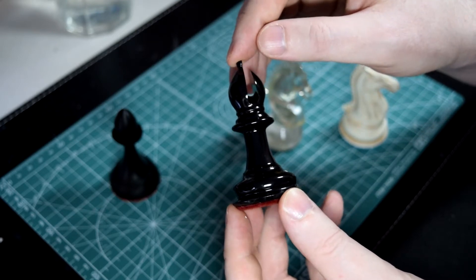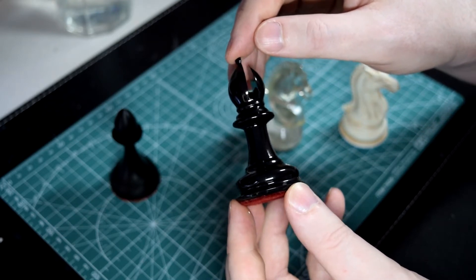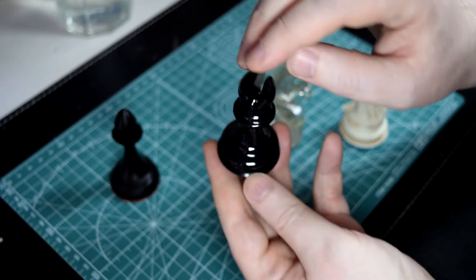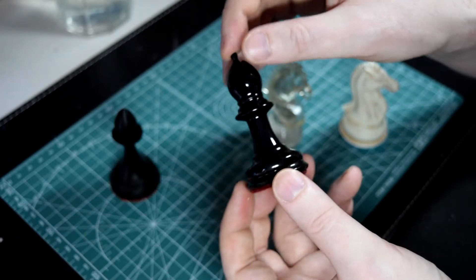This high-gloss bishop has been coated with varnish to remove the layer lines. The layer lines are obscured by varnish, and that's what gives it the smooth, shiny finish.